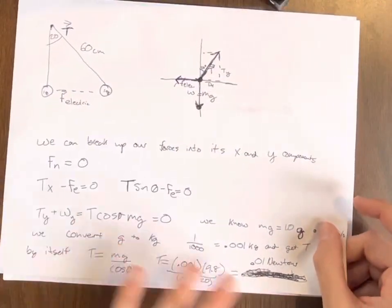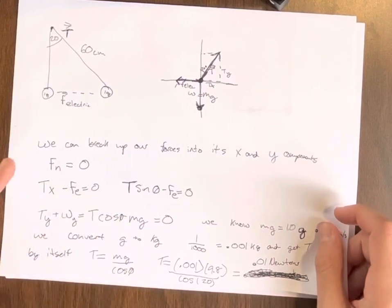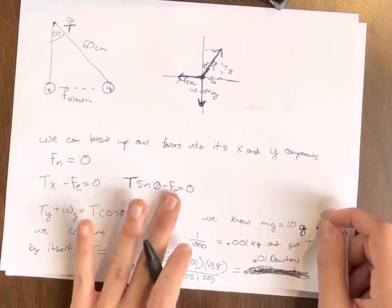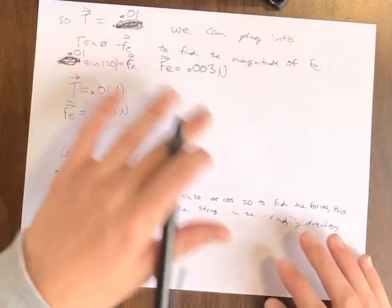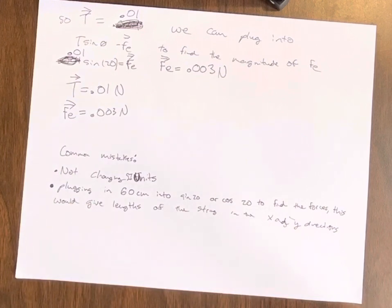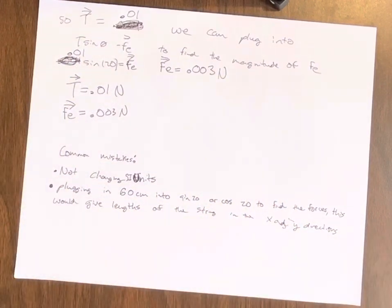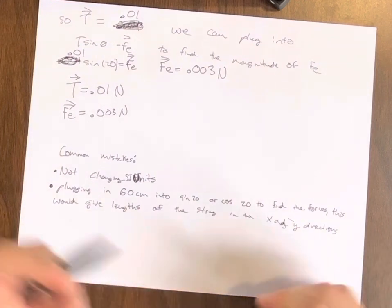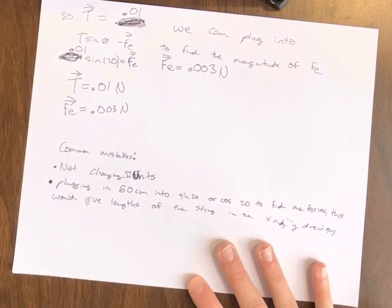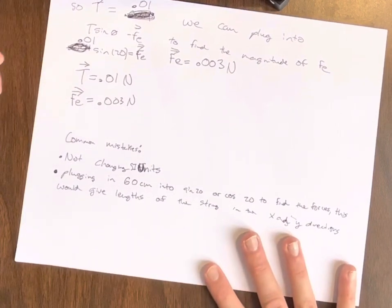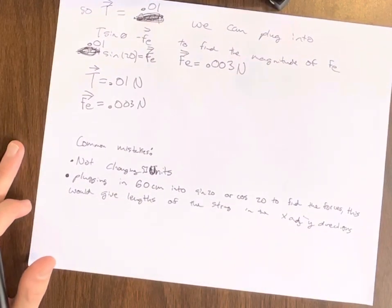And then using that, we can just plug the force of the tension back into our X. So it would be tension times sine theta will be equal to our F-electric. So if our tension is 0.01 newtons, we can plug that in. So it's 0.01 sine 20. And we will add Fe to the zero to make it equal to our electric force. So to find the magnitude, 0.01 newtons times sine 20 equals our electric force, the magnitude of the electric A, which is 0.003 newtons. So our tension is 0.01 newtons and the magnitude of our electric force is 0.003 newtons.